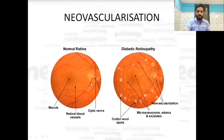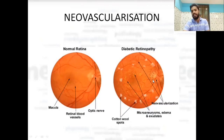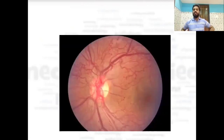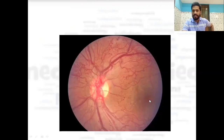Another finding in diabetic retinopathy is neovascularization. In a normal retina you see the optic disc, retinal blood vessels, and macula. In diabetic retinopathy, multiple tiny new vessels form near the optic disc — this is neovascularization. Cotton wool spots, microaneurysm, and macular edema are also seen in diabetic retinopathy.